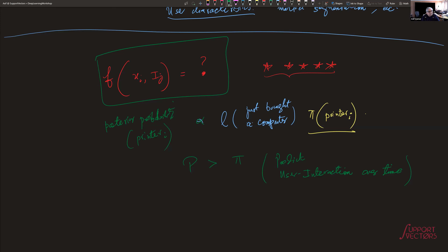Netflix threw out a roughly one-million-dollar prize asking: can somebody beat their model by 10%? Many teams tried, then collaborated with each other. The team that won — a collaboration of two or three teams — finally beat the 10% boundary by a significant amount, going first to 11%, then 12 or 13%, soundly beating Netflix's own model. That algorithm will serve as our beginning foundation today.